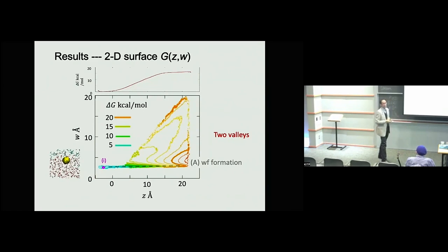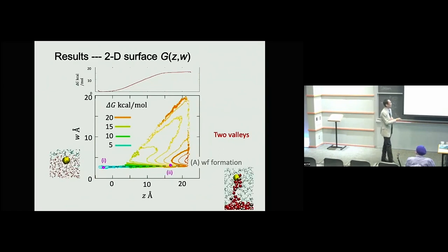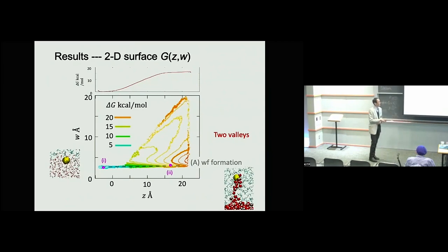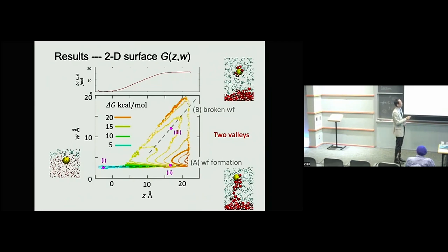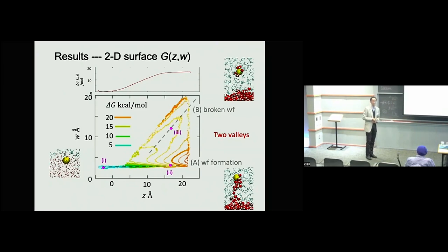Now looking at the two-dimensional surface: in the oil phase region, the surface is characterized by small W, meaning water finger formation. This barrier corresponds to water finger formation. At one state, D is positive and water finger is formed — this corresponds to the connected configuration. We also have another state characterized by large W, meaning the water finger is broken. Two states have almost the same Z coordinate but different structures, and the difference is well characterized by the water finger coordinate W. These two states are separated by a barrier.